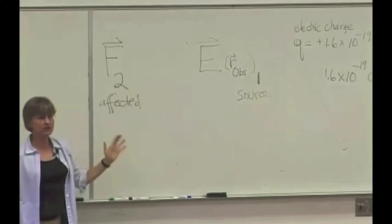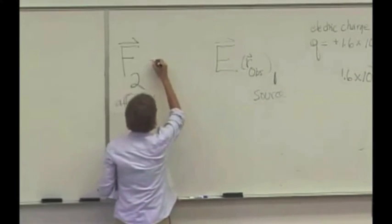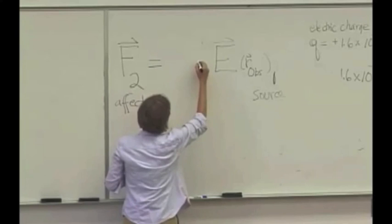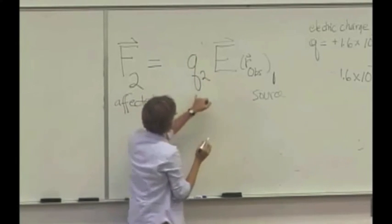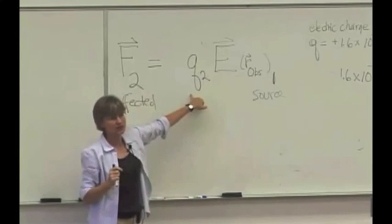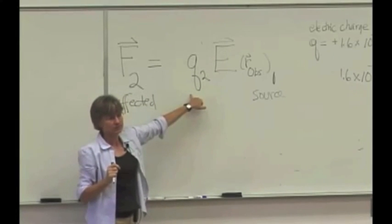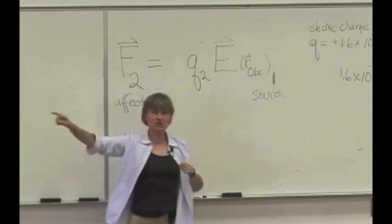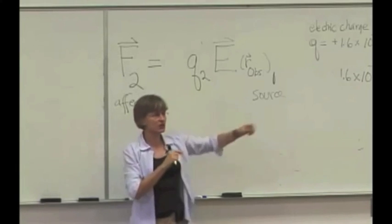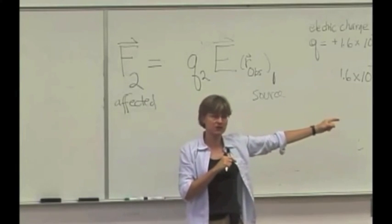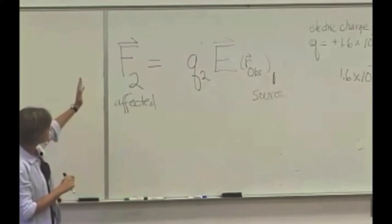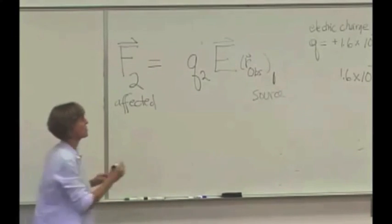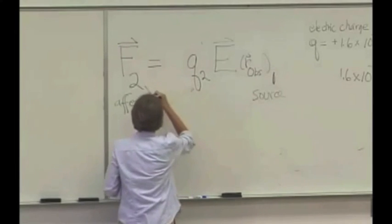You're absolutely right. The force is directly proportional to the electric field, and it's also directly proportional to the charge of the object that's being affected. A proton experienced a force in that direction. An electron experienced a force equal in magnitude, but in the other direction. Now let's see if this equation works. This is the thing that's affected, particle 2.